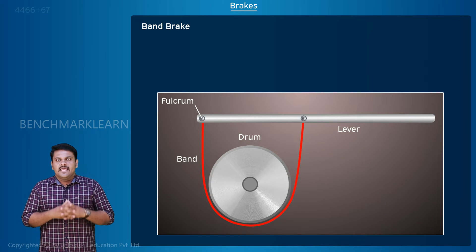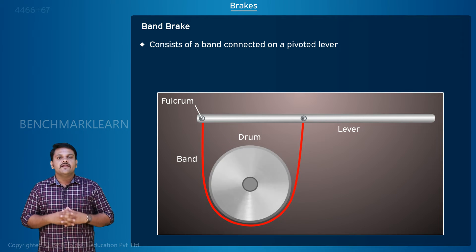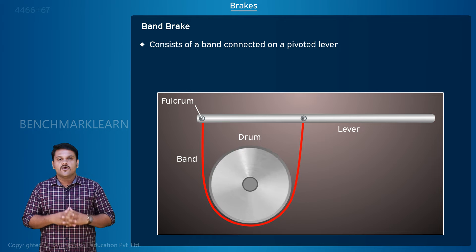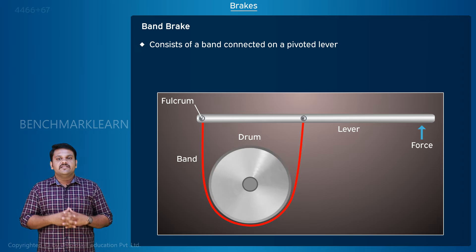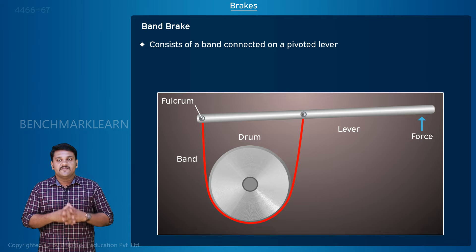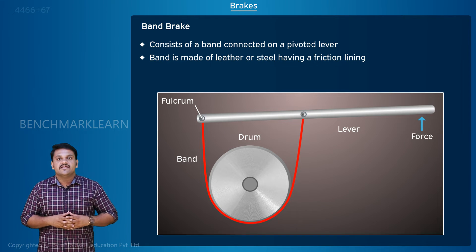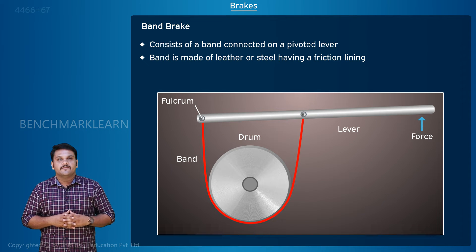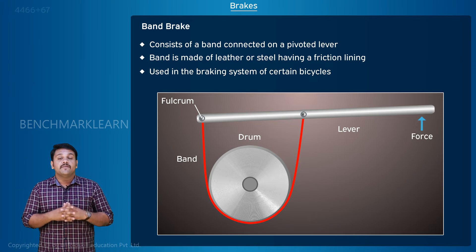Band brake: a band brake consists of a band connected on a pivoted lever. When the drum is rotating, the lever is pulled, causing the band to tighten and rub on the drum. The frictional force between the band and rim of the drum makes the drum stop its rotation. The band and drum heat up during this process, and the heat generated is dissipated into the air. The band is either made of leather or made of steel with a friction lining. Band brakes are less commonly used and are found in the braking systems of certain bicycles.